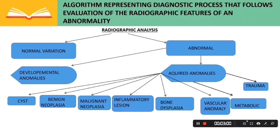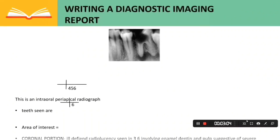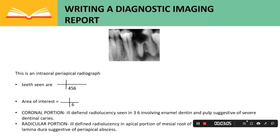How to write a diagnostic imaging report: this is an intraoral periapical radiograph. The teeth seen are in the third quadrant, four, five, six area. The area of interest is third quadrant six. The coronal portion shows ill-defined radiolucency in tooth 36 involving enamel, dentine, and pulp, suggestive of severe dental caries.